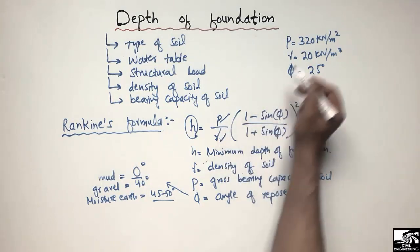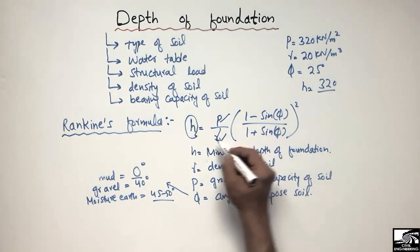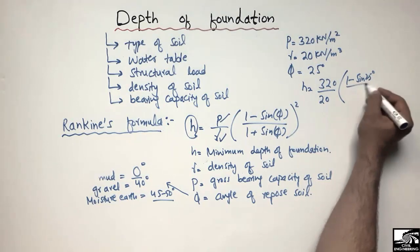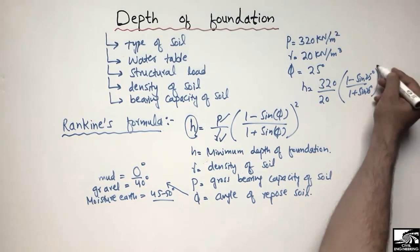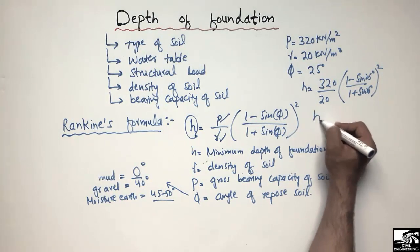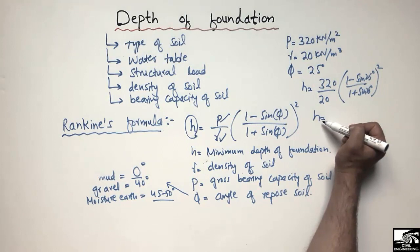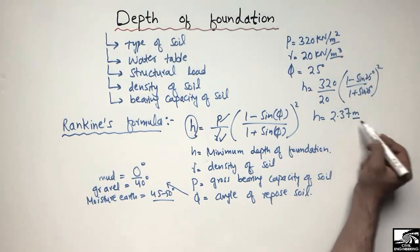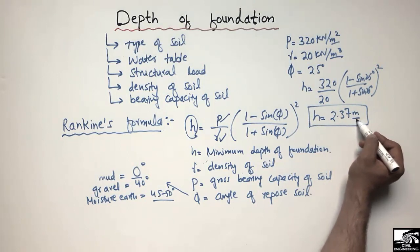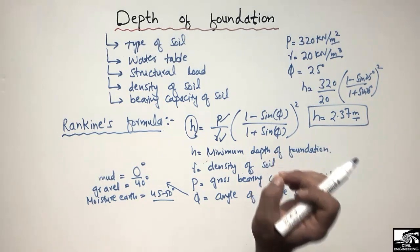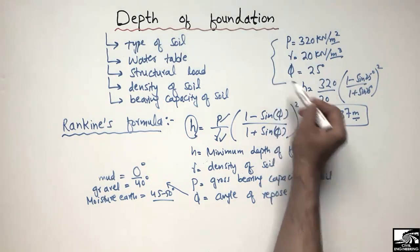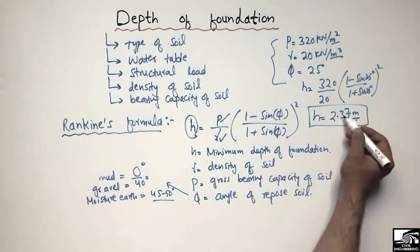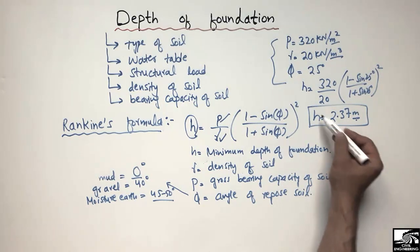So we are going to find out the minimum depth of foundation. It will be equal to p which is 320, divided by gamma which is 20, multiplied by 1 minus sine of 25 degrees divided by 1 plus sine of 25 degrees, raised to the power of 2. We can find out h, the minimum depth of foundation, and it comes out to be 2.37 meters.